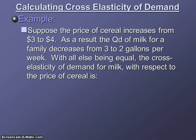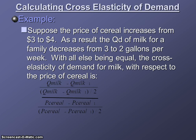Here's an example. Suppose the price of cereal increases from three to four dollars. As a result, the quantity demanded of milk for a family decreases from three to two gallons per week. With all else being equal, the cross elasticity of demand for milk with respect to the price of cereal is — we're going to plug our numbers into this formula.